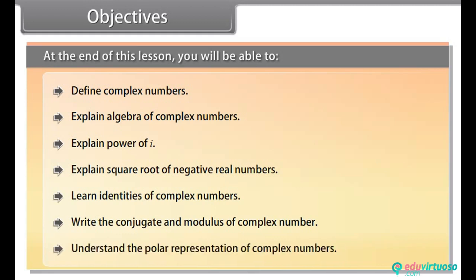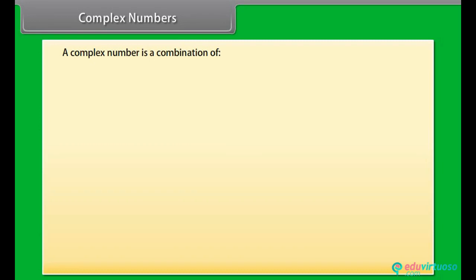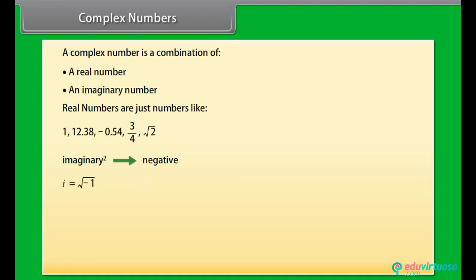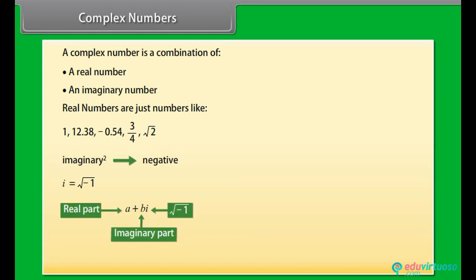Complex numbers. A complex number is a combination of a real number and an imaginary number. Real numbers are just numbers like 1, 12.38, minus 0.54, 3/4, square root 2. Imaginary numbers are special because when squared they give a negative result. The unit imaginary number is iota, which is the square root of minus 1. A plus B iota is a complex number — a combination of a real number and imaginary number. Examples are: 1 plus iota, 39 plus 3 iota, minus 2 plus pi iota, square root 2 plus iota by 2.